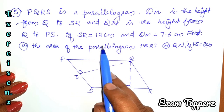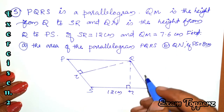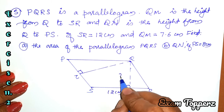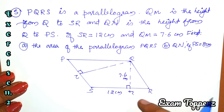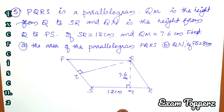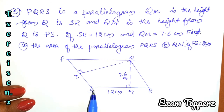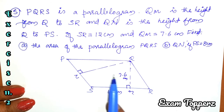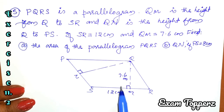If SR is equal to 12 cm and QM is equal to 7.6 cm, find the area of the parallelogram.